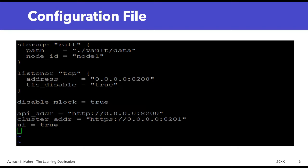Before that, let me explain one thing. If you watched episode 02 where I installed and started the Vault server, you noticed I started it in the dev environment. As long as you're just testing, the dev environment is okay. But when it comes to SIT, UAT, or production, and you want to configure the Vault server yourself, there are several settings you need to configure — and that's the target of this session.